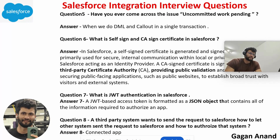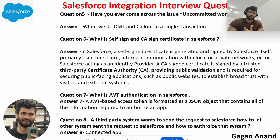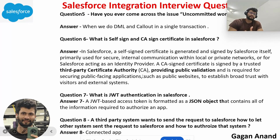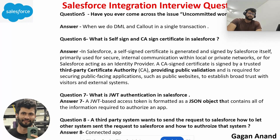Sixth question: what is a self-signed certificate versus a CA-signed certificate? Both are used for authorization purposes. A self-signed certificate is generated by Salesforce itself. A CA-signed certificate is issued by a third-party Certificate Authority, which makes it more secure. So the CA-signed certificate is more secure, while the self-signed certificate is not as secure.